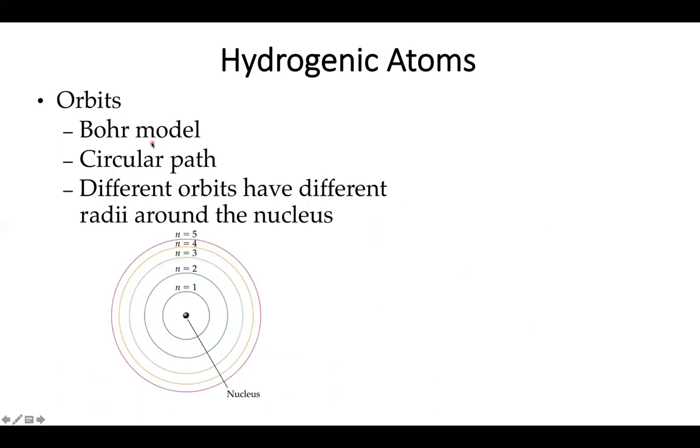When we're talking about the Bohr model, we're really describing the system in orbits, this planetary model. When you hear orbits, you think about electrons moving in a circular path. Each orbit has a different radii and a different energy.